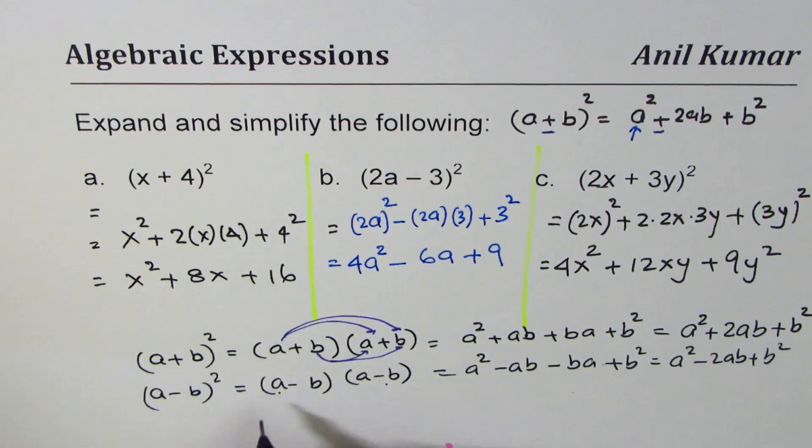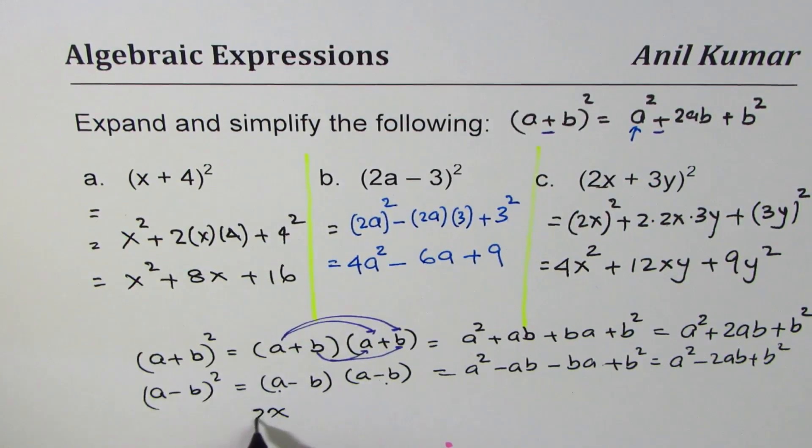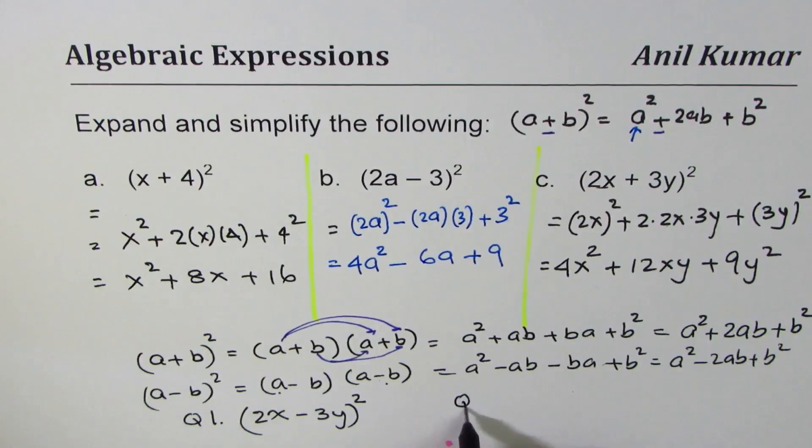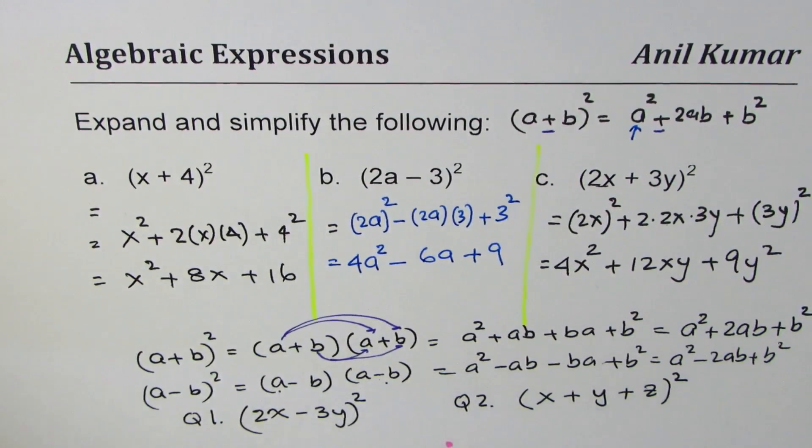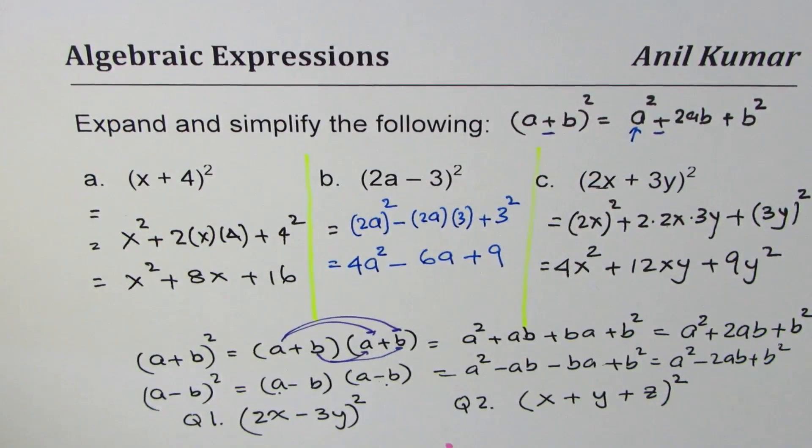So now here is a practice question for you. You have to do 2x minus 3y whole square. This is question 1 for you. Question 2 is slightly complicated. Let us say you have x plus y plus z whole square. How are you going to do this one? Try these questions as practice question. I'm going to take up x plus y plus z whole square in the next video.